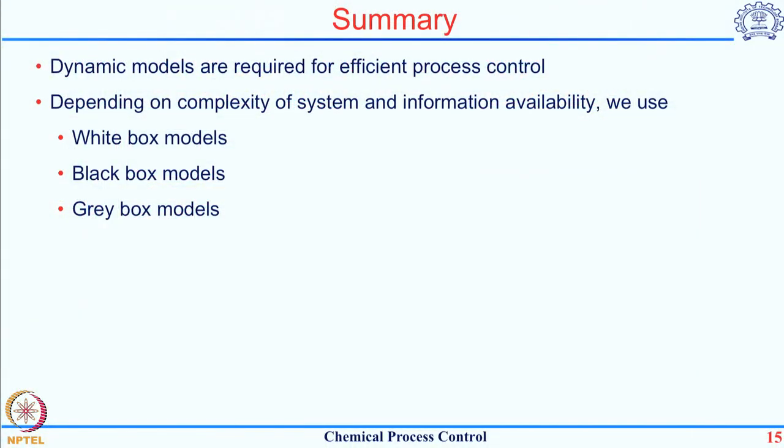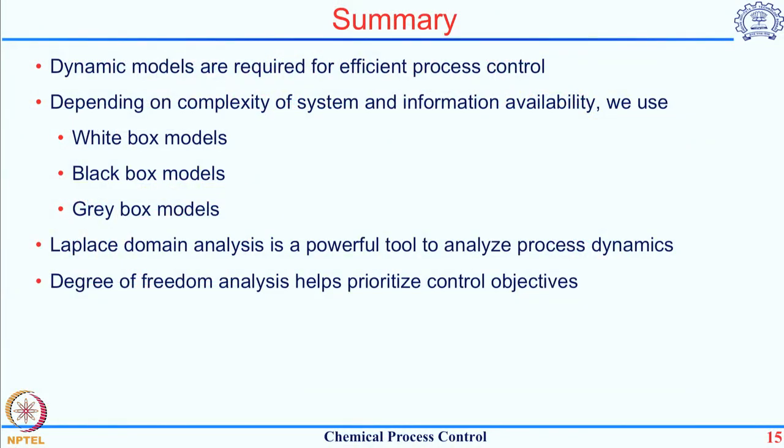To summarize this lecture: dynamic models are required for efficient process control as they describe how the system behaves, which can be used to design a control strategy. Depending on the type of system, any one of first principle (white box), empirical (black box), or grey box models can be formulated. We represent dynamic models in the Laplace domain because it simplifies analysis and controller design. Finally, degree of freedom analysis is carried out before starting control work because it gives an upper limit on how many control objectives can be satisfied for a given process.